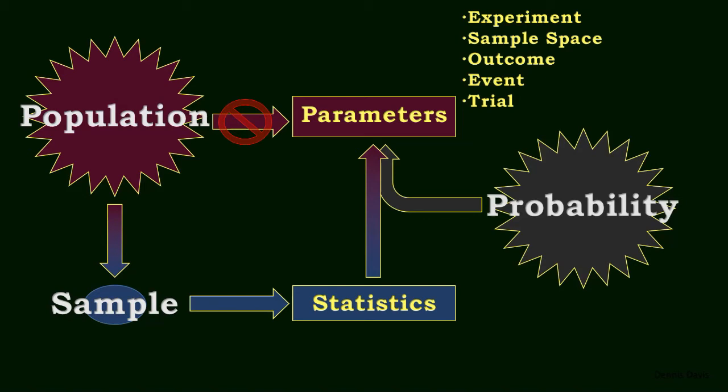A random experiment is a process by which we observe something where the results are uncertain beforehand. A sample space is all the possible things that could happen in our experiment. The outcome is the thing that did happen, the result of our random experiment. An event is a subset of the sample space that we are interested in, and we are usually trying to determine the probability of the event occurring. When a random experiment is repeated several times, we call each repetition a trial.